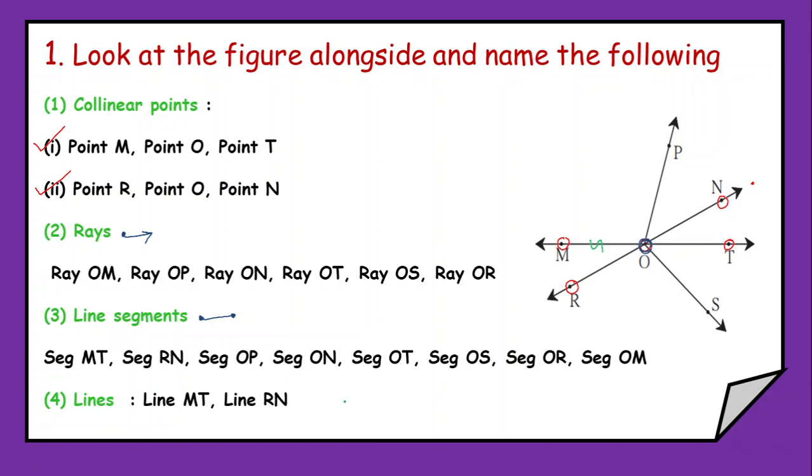Then we have lines. Now what are the lines? They end with both the arrow heads. At both the ends they have an arrow head. Now here we have just two lines. First one is line MT and second one is line RN.